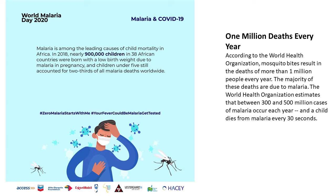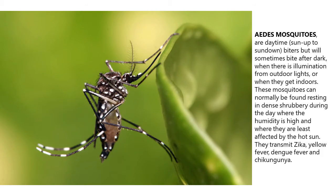The World Health Organization estimates that between 300 and 500 million cases of malaria occur each year, and a child dies from malaria every 30 seconds. Aedes mosquitoes are daytime, sunup to sundown biters, but will sometimes bite after dark when there is illumination from outdoor lights or when they get indoors. These mosquitoes can normally be found resting in dense shrubbery during the day where the humidity is high and where they are least affected by the hot sun.